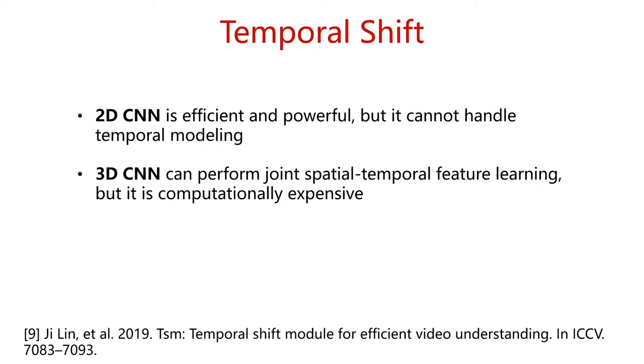As we all know, two-dimensional convolutional neural network is efficient and powerful, but it cannot handle temporal modeling. Three-dimensional convolutional neural network can perform joint spatial temporal feature learning, but it is computationally expensive. If we want to realize the spatial temporal modeling of 3D convolution with the time complexity of 2D convolution, we can use the technique proposed in TSM.